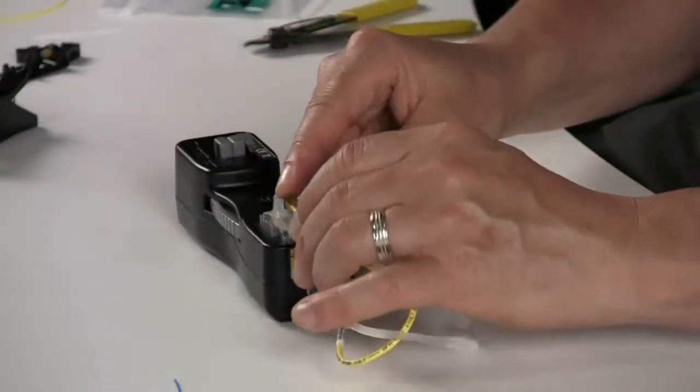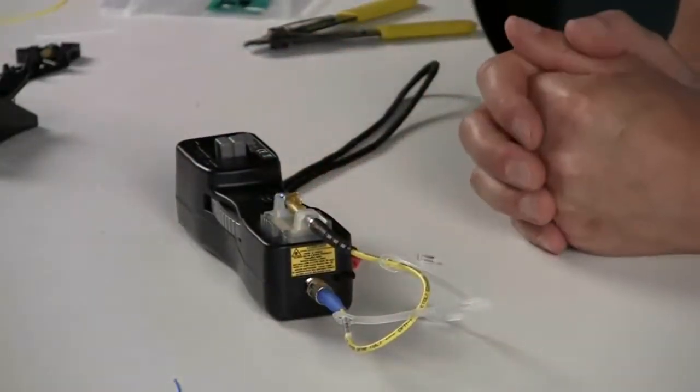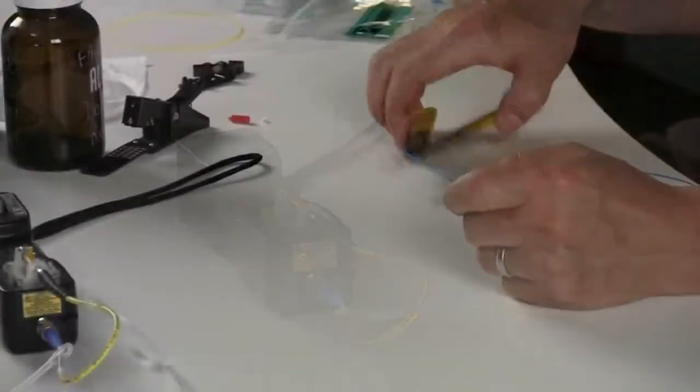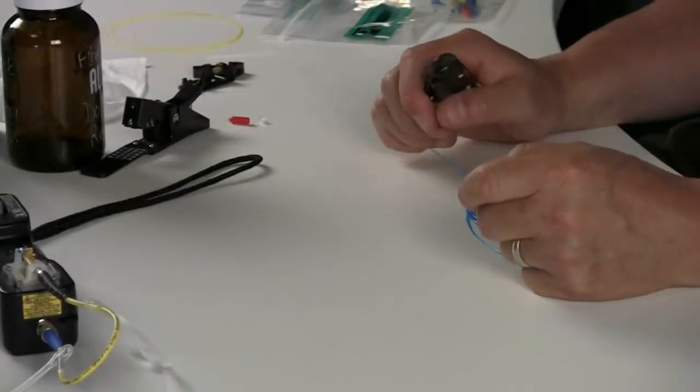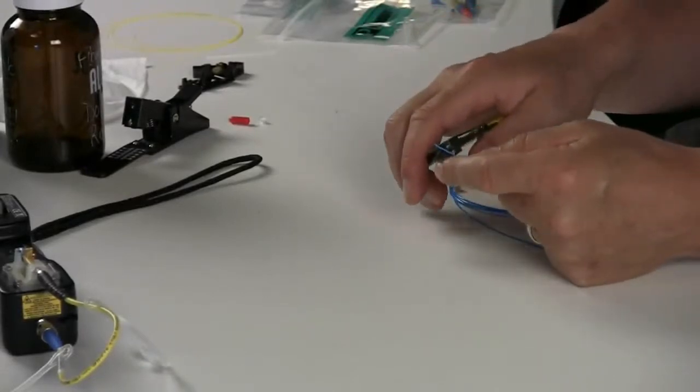And then you attach the LC patch cord to the connector. In order to do a 900 micron termination, one of the things to do is to strip the cable. You would strip the cable approximately 30 mm.